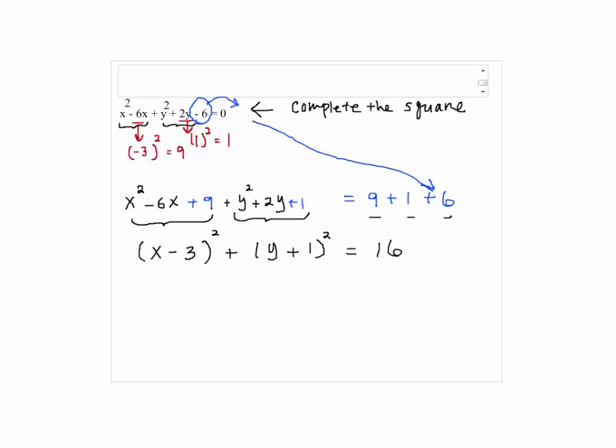Now, 9 plus 1 plus 6 is 16. So now we have a standard form of the circle. So the center of the circle will be given by 3 comma negative 1.